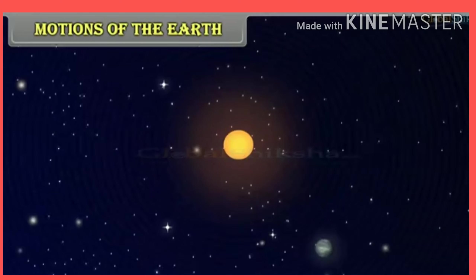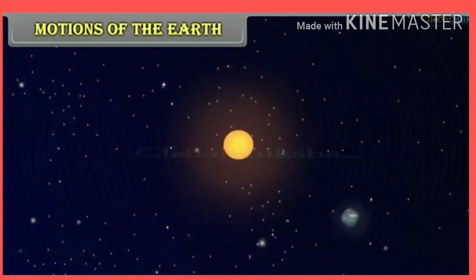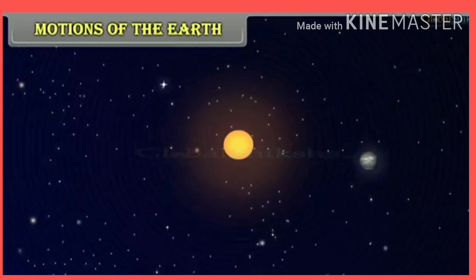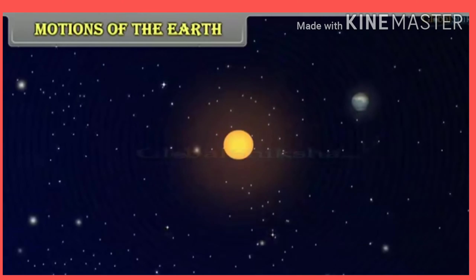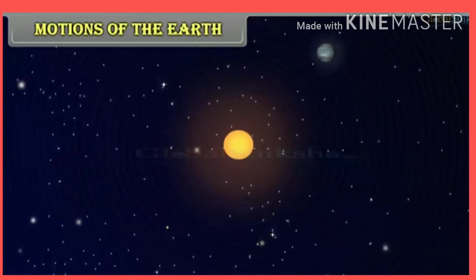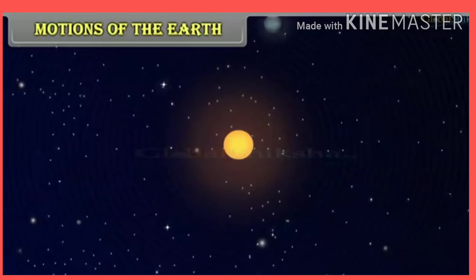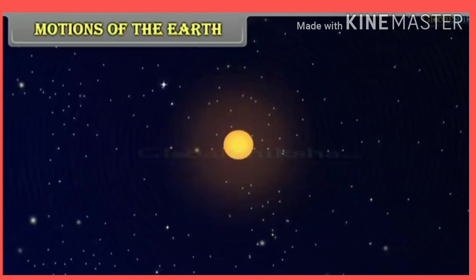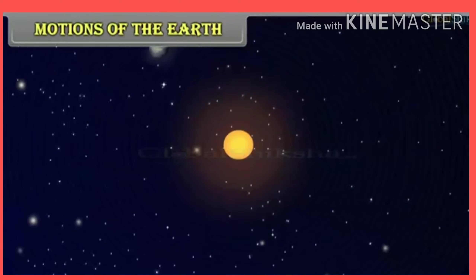It seems as if the sun rises in the morning from the eastern horizon, goes overhead, and then in the evening sets in the western horizon. In fact, this is not so. It is not the sun but the earth that moves. The sun is in the center and the earth goes round the sun.